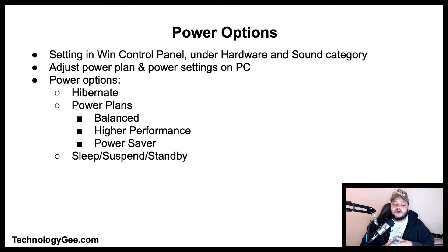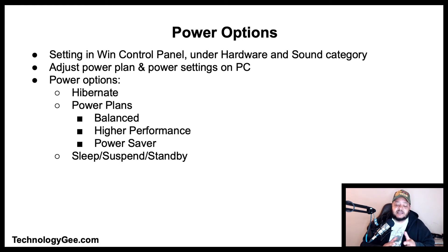Power Options is a setting in the Windows Control Panel under the Hardware and Sound category. It allows the user to adjust their power plan and power settings. Available options include Hibernate, which pauses the system and requires pressing the power button to wake. Windows has three standard power plans: Balanced, the default plan that balances performance with energy consumption; High Performance, which offers the fastest CPU performance, brightest screen, and shortest battery life; and Power Saver, which reduces CPU performance and screen brightness for the longest battery life.